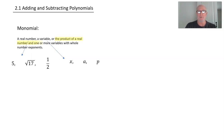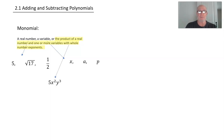The product of a real number and one or more variables with whole number exponents — product means we multiply. So we're just going to take a real number times a variable. So we have something like 5x²y³. That's 5 times x² times y³. That's a product.